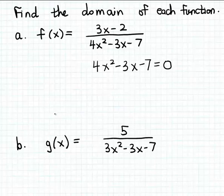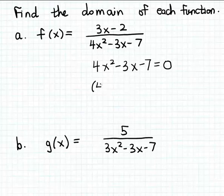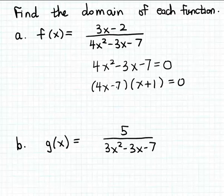When we set this denominator to zero, we get a quadratic equation because it has an unknown squared term, 4x squared. We have several techniques for solving quadratic equations — one of them is factoring, another is the quadratic formula. I'm going to solve this by factoring. Not all quadratic equations can be solved by factoring, but this expression on the left-hand side will factor. It factors as 4x minus 7 times x plus 1. You can check that by multiplying out to get 4x squared minus 3x minus 7.